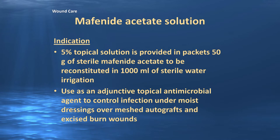Sulfamylon solution is a 5% topical solution provided in 50-gram packets of sterile mafenide acetate, to be reconstituted in a liter of sterile water for irrigation — just pour the powder into the bottle and shake. We use it as an adjunctive topical antimicrobial agent to control infection under dressings over meshed autografts and excised burn wounds.